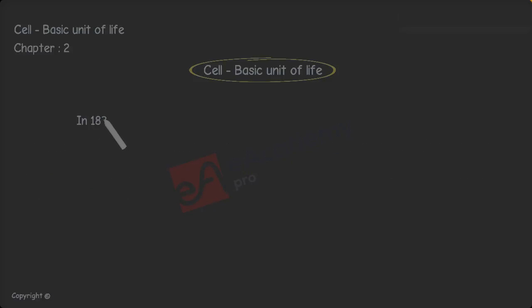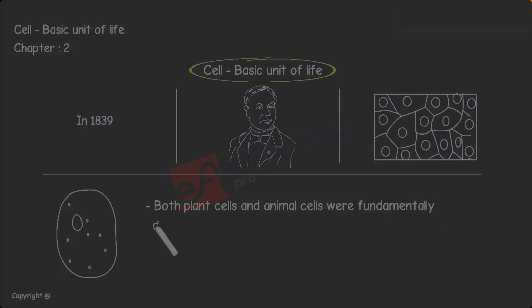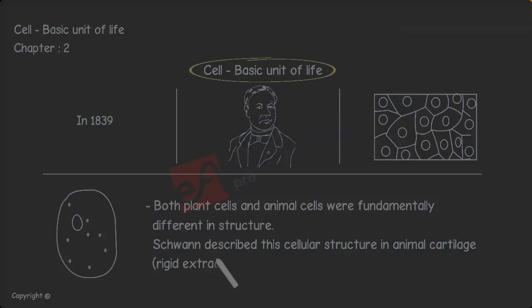In 1839, Theodor Schwann, a German biologist, came to a conclusion that animal tissue is also composed of cells which are the small units and ended any speculations that both plant cells and animal cells were fundamentally different in structure. Schwann described this cellular structure in animal cartilage, rigid extracellular matrix.